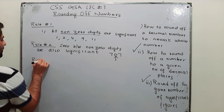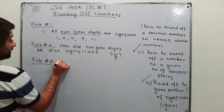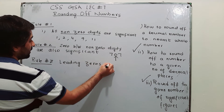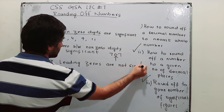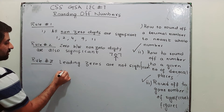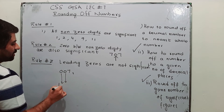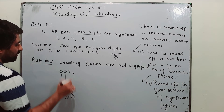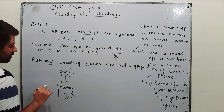Rule number 3: leading zeros are not significant. Leading zeros are zeros before a non-zero number. For example, in 0.00008, all the leading zeros are not significant — only the 8 is significant.